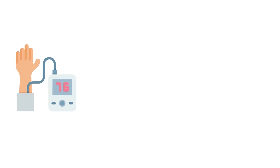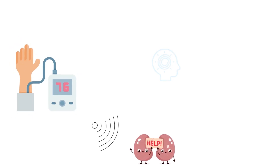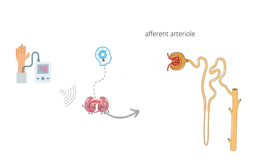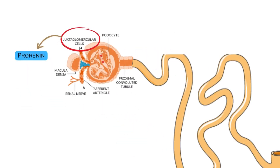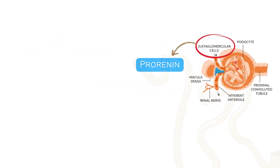When the blood pressure drops suddenly, the kidney senses that fall in pressure and activates the RAS system. Within the afferent arterioles of the kidney, specialized cells called juxtaglomerular or JG cells contain prorenin, which is a protein that constitutes a precursor for renin — the hormone that activates the renin-angiotensin system, which serves to raise blood pressure.